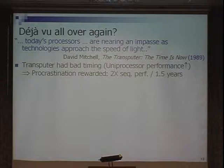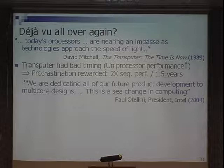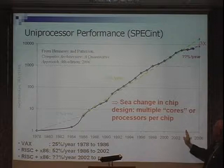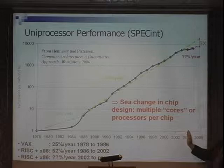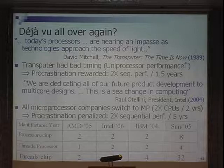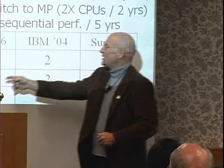This sounds familiar: 'today's processors are nearing an impasse, technologies are approaching the speed of light.' Who said that and when? That was a guy who worked for Transputer in 1989. He said that right here on the performance chart — microprocessors aren't going to get any faster. Well, he was wrong. That was bad timing, and procrastination is rewarded. Why dual parallelism? 'We are dedicating all of our future products to the development of multicore designs. This is a sea change in computing.' The president of Intel said that in 2004 — two years into the flattening. Intel that same year canceled a bunch of uniprocessor projects and started an emergency multiprocessor effort they're still trying to catch up on today.